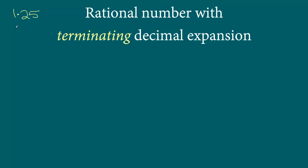A non-terminating example will be 1.37 with a bar on 37, which simply means that the digits 37 will continue to repeat. This video deals with only the first type, which is the terminating decimal expansion.